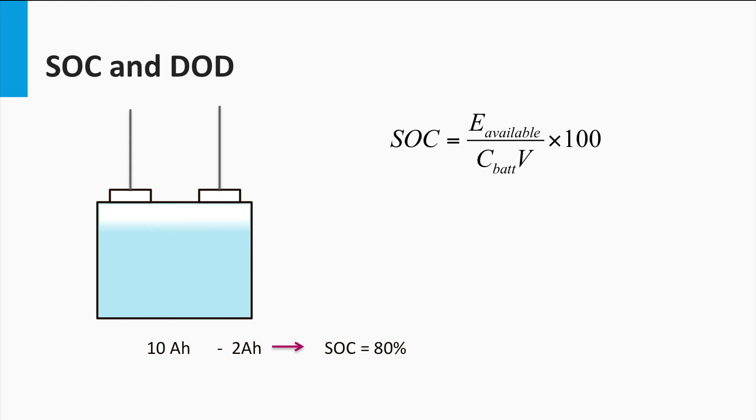Then we also have the depth of discharge or DOD. Depth of discharge is defined as the percentage of the battery capacity that has been discharged. Thus a 10Ah battery that has been drained by 2Ah has a depth of discharge of 20%. Thus the depth of discharge and the state of charge can be seen as complementary to each other.